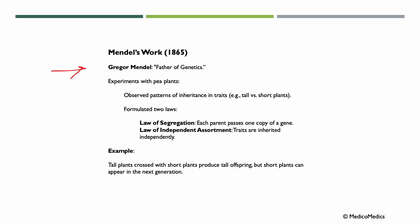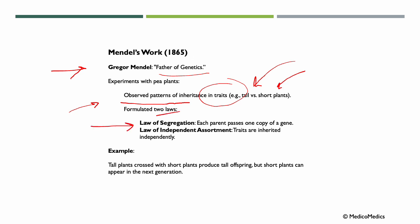Gregor Mendel, called the father of genetics, experimented with pea plants and observed patterns of inheritance in traits — for example, tall versus short plants. That led him to formulate two laws: first, the law of segregation, where each parent passes one copy of a gene; and second, the law of independent assortment, so traits are inherited independently.